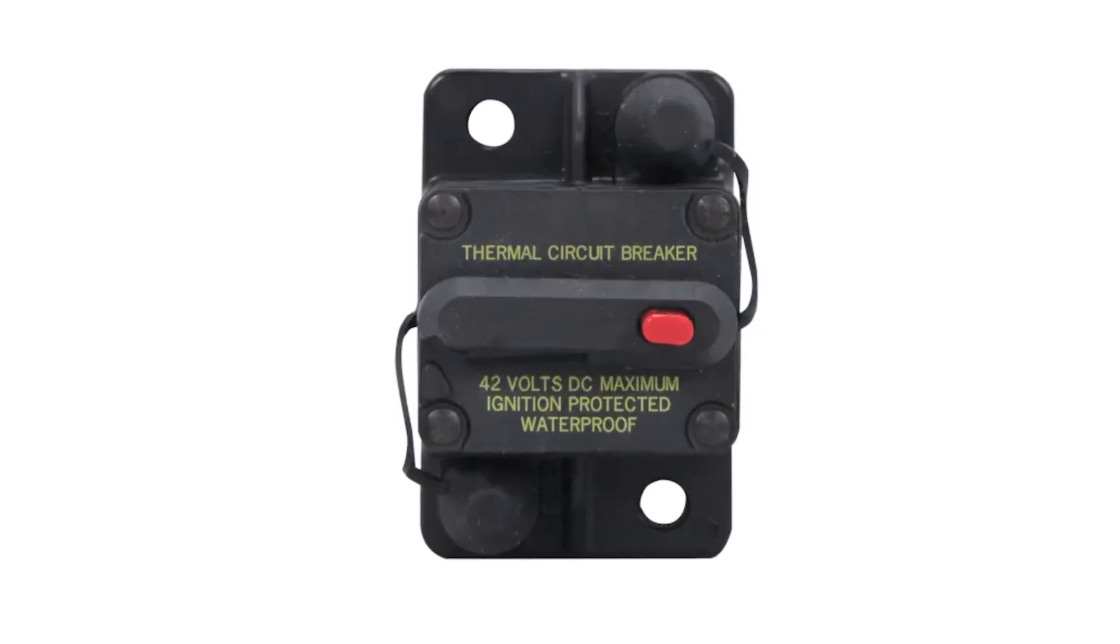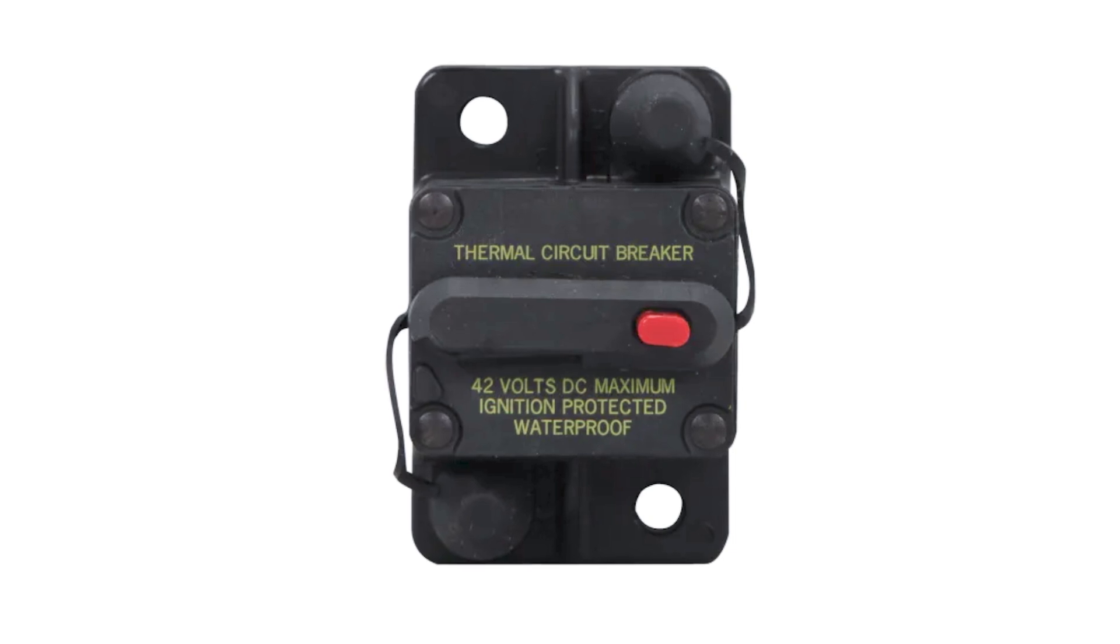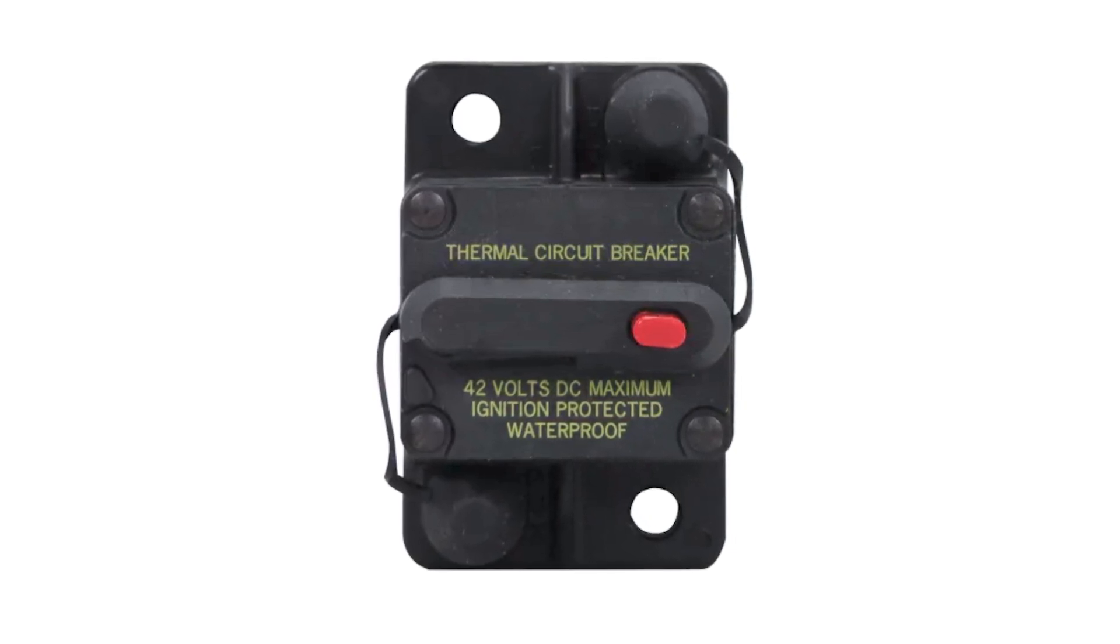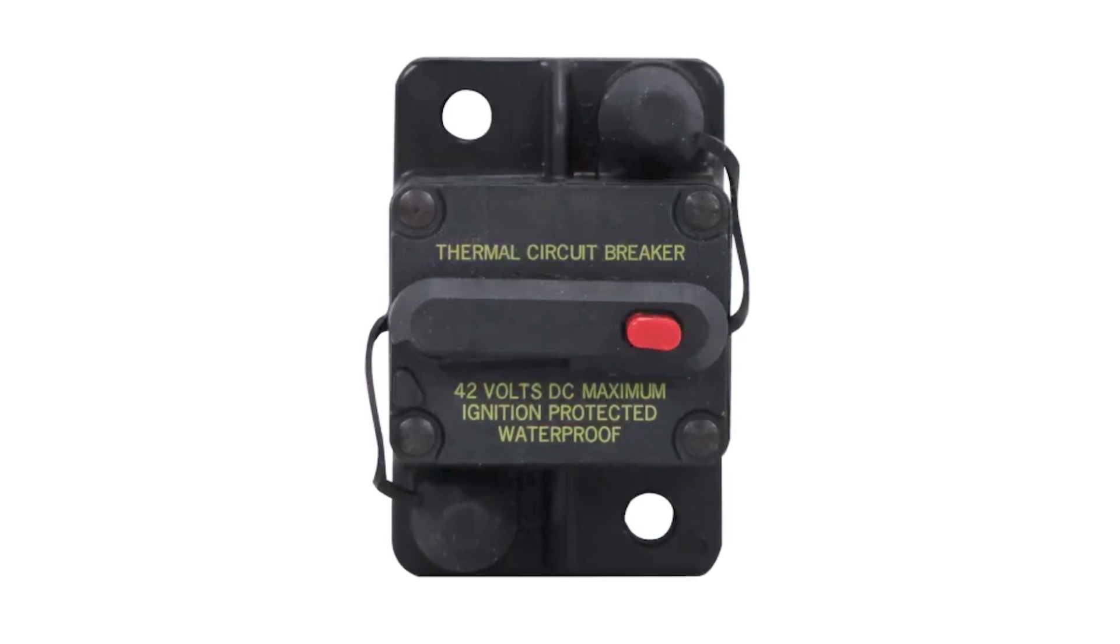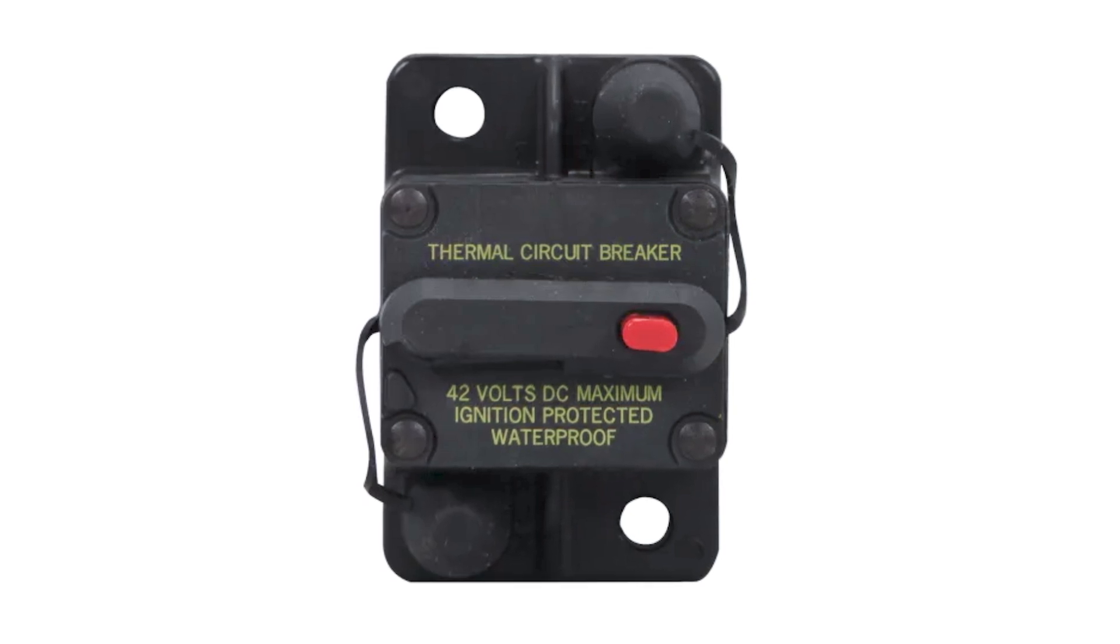Connect the power cable to a circuit breaker rated for 60 continuous amps. A circuit breaker is not included. The circuit breaker must be in the off position before you connect the power cables from the trolling motor. If necessary, connect the circuit breaker to a 60 amp, 24 or 36 volt power source.